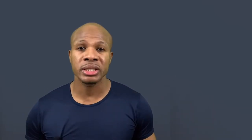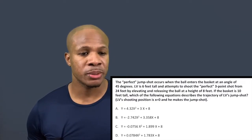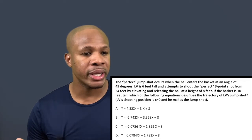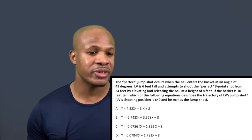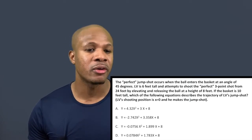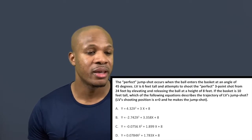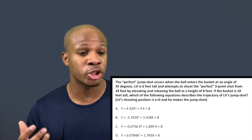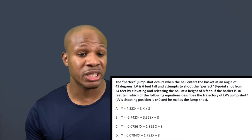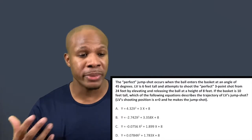We're going to answer two questions about shooting the perfect jump shot. Question one: the perfect jump shot occurs when the ball enters the basket at an angle of 45 degrees. LV is six feet tall and attempts to shoot the perfect three-point shot from 24 feet by elevating and releasing the ball at a height of eight feet. The basket is 10 feet tall. Which of the following equations describes the trajectory of LV's jump shot? LV's shooting position is x equals zero, and he makes the jump shot.